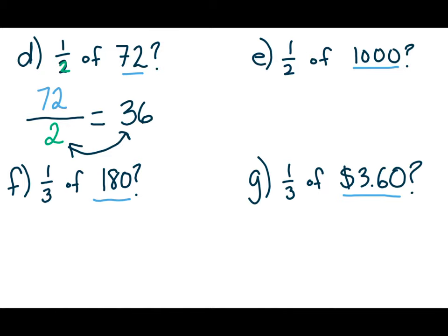All right. In this one, our dividend, our numerator is $1,000. In this one, it's $180. And in this one, it's $3.60. So if I were to take $1,000 and I were to cut that $1,000 in half, one half of $1,000 would be $500.